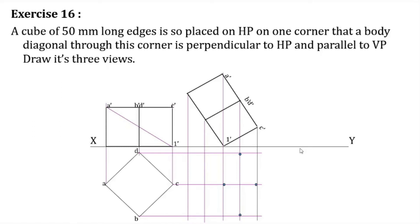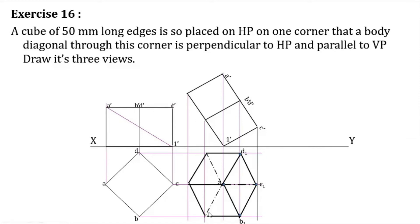The top view is a regular hexagon. All its edges starting from corner 1-dash are invisible edges, shown as chain lines — they should actually be dotted lines. So all edges starting from corner 1 are dotted. This is the top view corresponding to the solid diagonal perpendicular to HP and parallel to VP. This is very simple — in the previous case it was slightly more difficult, but in this case it is straightforward.